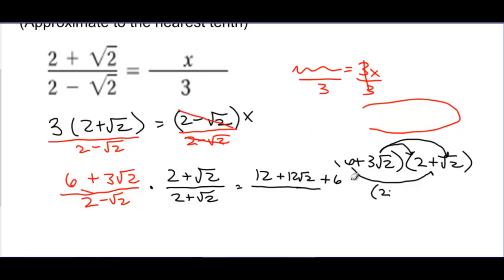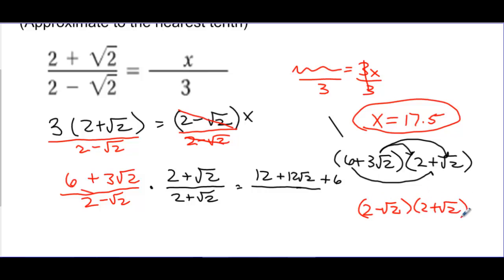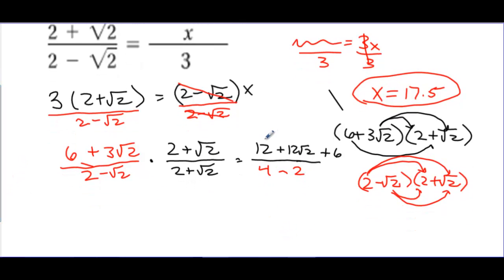The bottom looks like (2 minus the square root of 2) times (2 plus the square root of 2). Multiplying that out: that's 4, then we get negative 2 square root of 2 and positive 2 square root of 2, which cancel out. And the last multiply gives negative square root of 4, which is negative 2. So the bottom becomes 4 minus 2, which is 2. On the top I have 12 plus 6, that's 18, plus 12 square root of 2 — all over 2. I notice that 18 and 12 both divide by 2, so I simplify one more time to get 9 plus 6 square root of 2. That's my final exact answer.